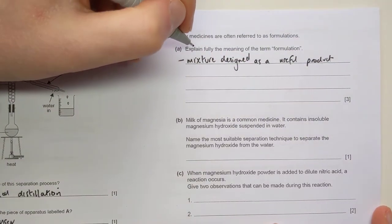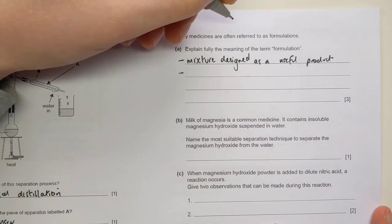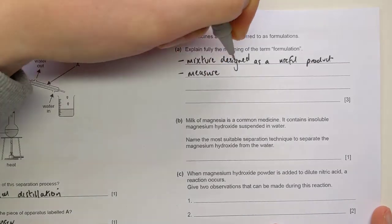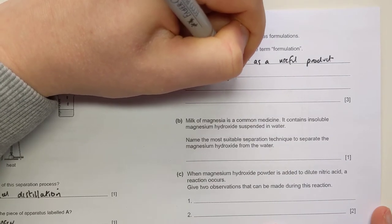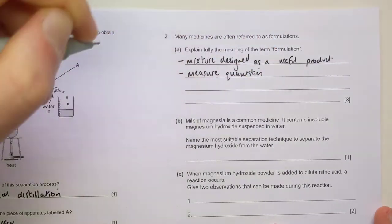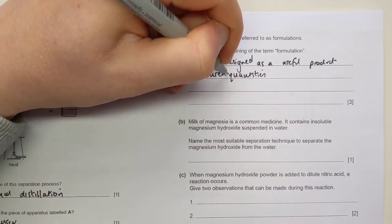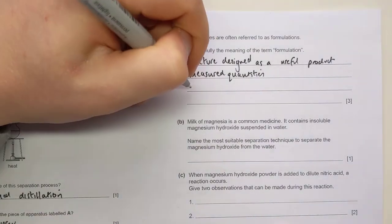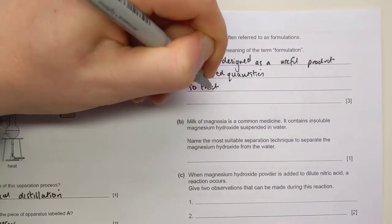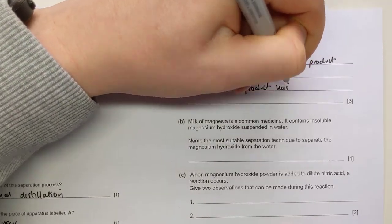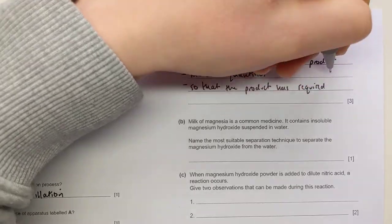The second mark is the idea that it has measured quantities. So that just means you're not putting in random amounts of different substances. You're actually measuring out specifically and carefully what you want in the final product. So measured quantities.